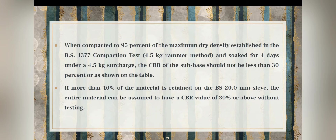If more than 10 percent of the material is retained on the BS 20 mm sieve, the entire material can be assumed to have a CBR value of 30 percent or above without testing.